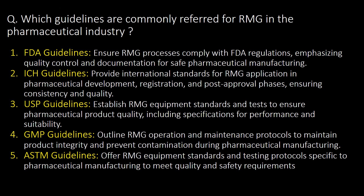Last and very important question: which guidelines are commonly referred to for RMG in the pharmaceutical industry? Following are the 5 guidelines commonly referred to for RMG: 1st FDA guidelines, 2nd ICH guidelines, 3rd USP guidelines, 4th GMP guidelines, and 5th ASTM guidelines.